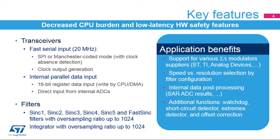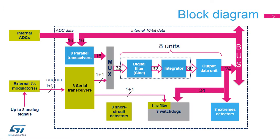The entire digital filter for sigma-delta modulators interface consists of 8 serial transceivers, 8 sync filter parts and integrators, 8 output data units, 8 analog watchdogs, 8 short-circuit detectors, 8 extreme detectors, and 8 parallel data input registers.